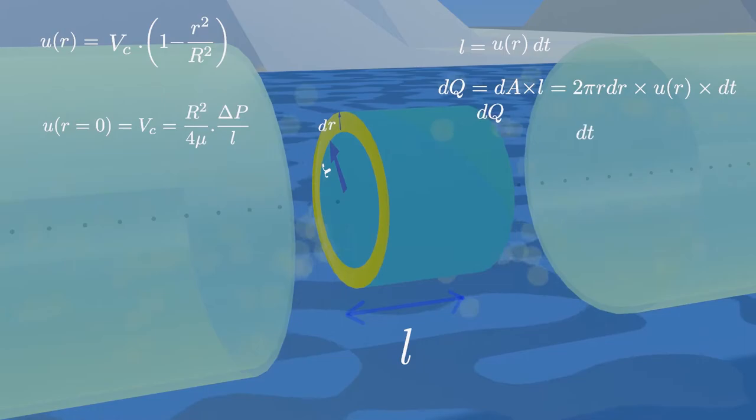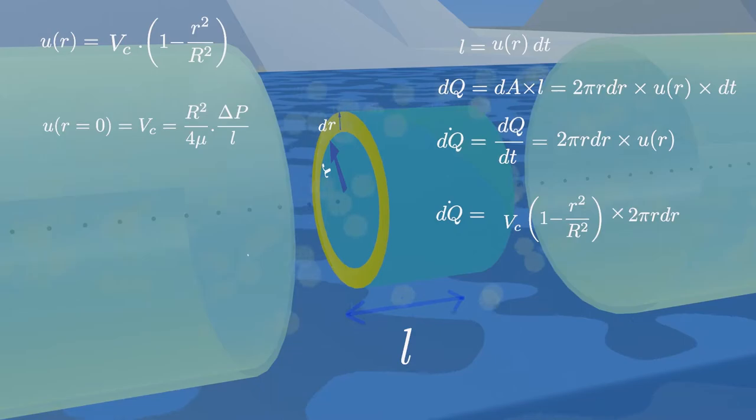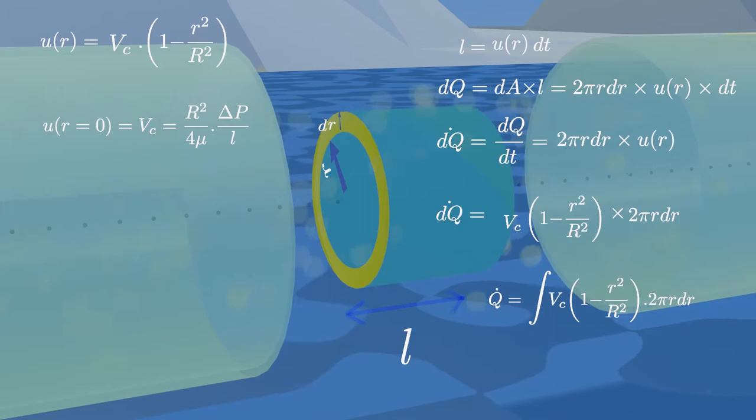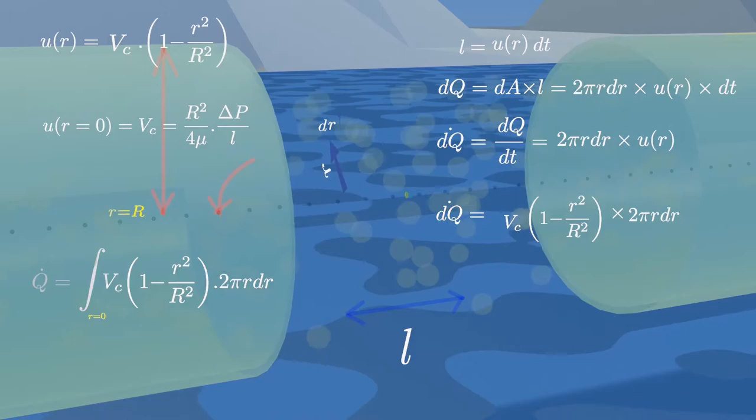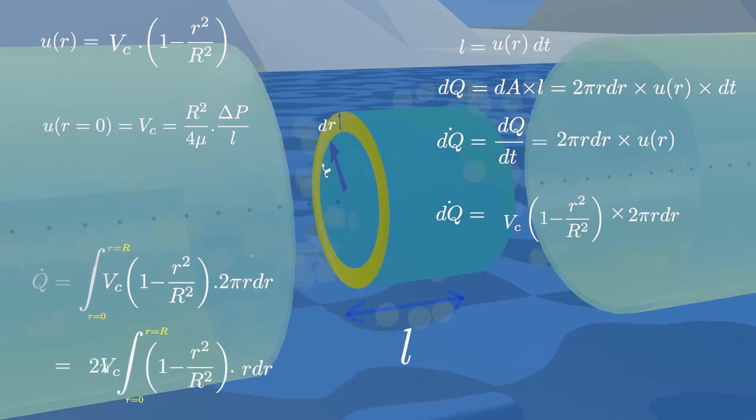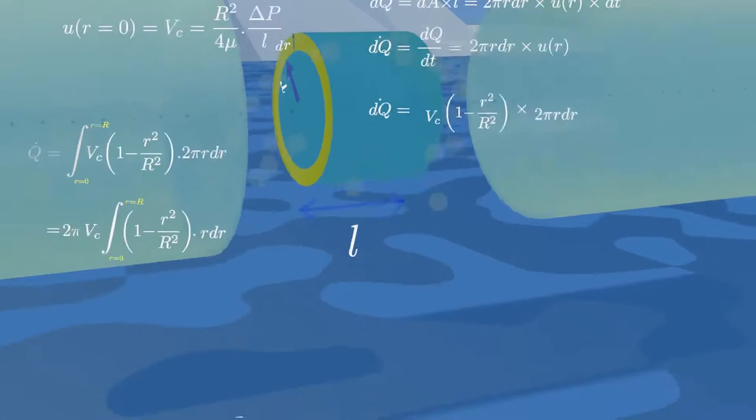Thus the small flow rate is obtained if we divide the volume by time. The volume flow rate through the entire pipe is finally obtained by integrating this equation with respect to the radius r, within the limits from r equals zero to r equals R. This integration is possible since the flow is axisymmetric about the center line.